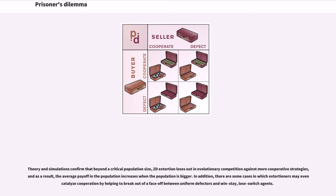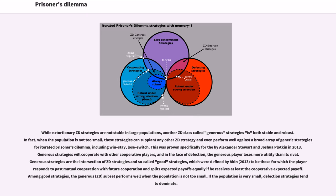In addition, there are some cases in which extortioners may even catalyze cooperation by helping to break out of a face-off between uniform defectors and win-stay, lose-switch agents. While extortionary ZD strategies are not stable in large populations, another ZD class called generous strategies is both stable and robust. When the population is not too small, these strategies can supplant any other ZD strategy and even perform well against a broad array of generic strategies for iterated prisoner's dilemma, including win-stay, lose-switch.